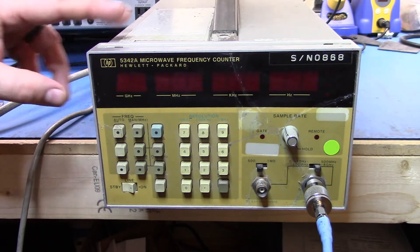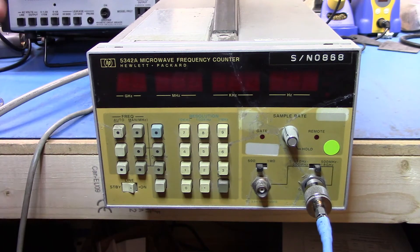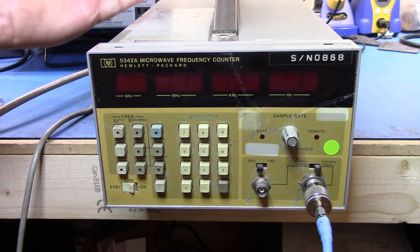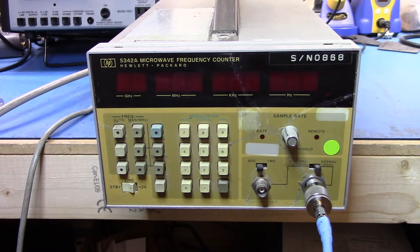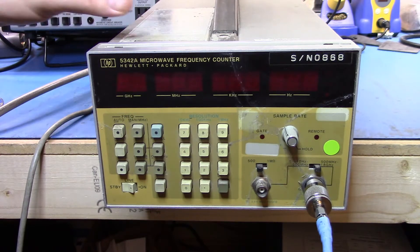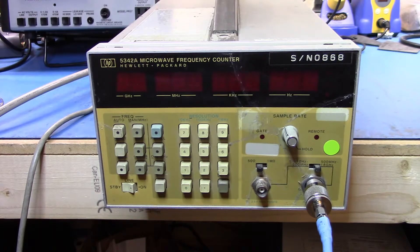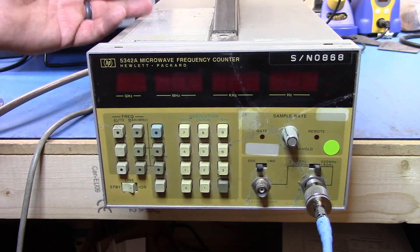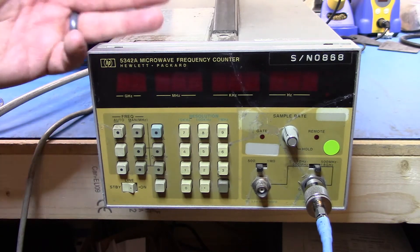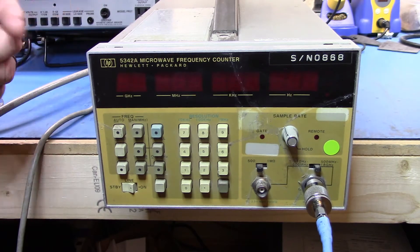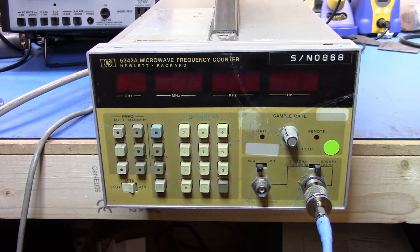So this counter is actually pretty cool. I've done a previous video on it, but this one here is basically a 10 hertz to 18 gigahertz counter, and it uses a unique method called heterodyne harmonic counting. And what that basically is, is it takes the heterodyne part where it will take a local oscillator and mix it with the incoming frequency, and then from there, it'll be able to send that resultant IF off to a counter to be counted.